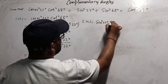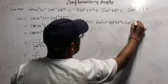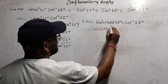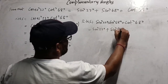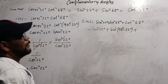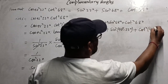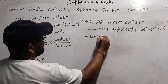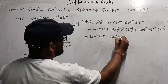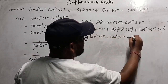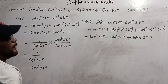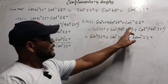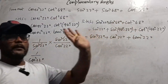On the RHS we have sin²22° + sin²68° + cot²68°. Change 68° to (90° - 22°): sin²68° becomes sin²(90° - 22°) = cos²22°, and cot²68° becomes cot²(90° - 22°) = tan²22°.